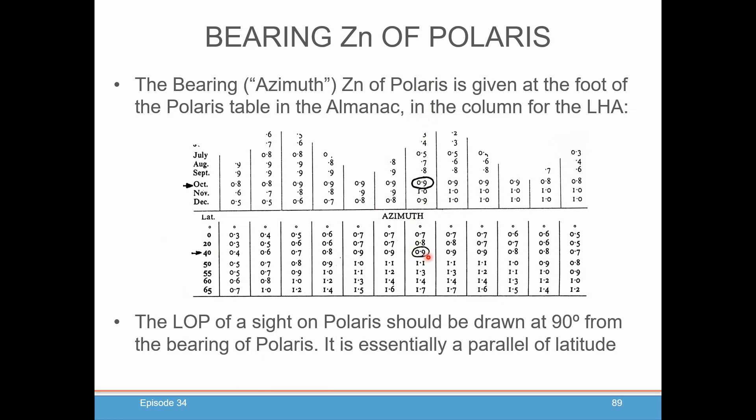That's 0 degrees, 0.9 minutes. Now, what is this used for? Most people just ignore that. But if for some reason you are particular about drawing your line of position exactly, normally most people would just draw it 90 degrees from the bearing of Polaris, which is 0 or 360. And that's basically a parallel of latitude. For most people, that's good enough.